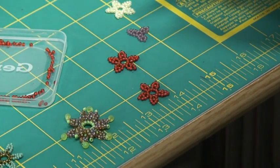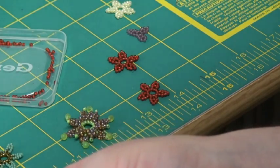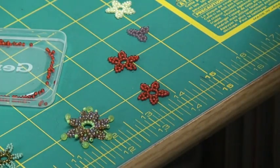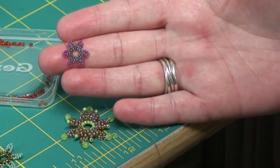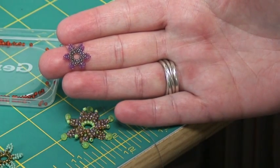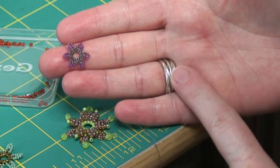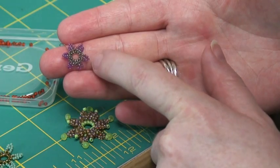I've also got, I've done some of the five petal, oh this is a six petal bead, in size fifteen beads. So you can see it is quite a bit smaller. And this is with an olive green and a fuchsia bead.